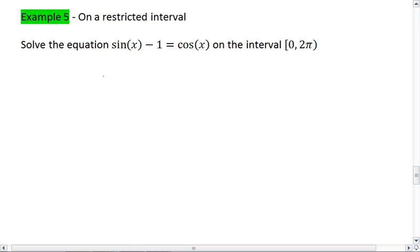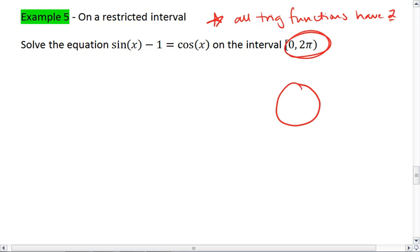and you're given some trigonometric equation on the interval of 0 to 2π, that's a full circle. And what you should know is that all trig functions have two distinct solutions on a full circle.